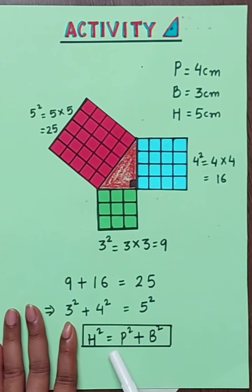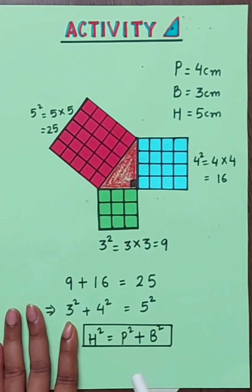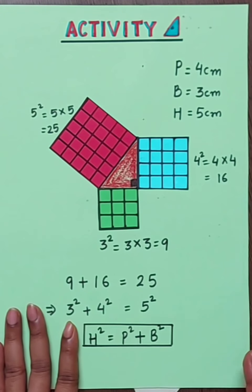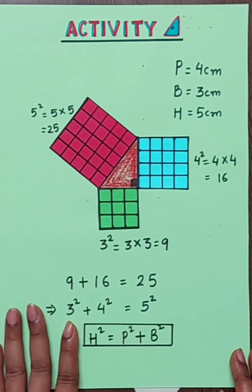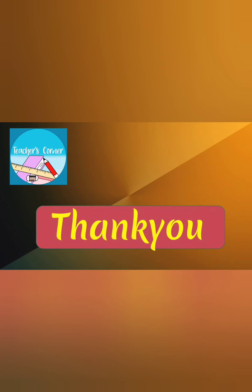This means the square of the hypotenuse is equal to the sum of the squares of the two perpendicular sides. We can write our observation as H squared equals P squared plus B squared — the square of hypotenuse equals the sum of square of perpendicular and base. This is how we have verified the Pythagoras property by doing this activity. I hope this video will be helpful for you to understand the concept of Pythagoras property. Thank you for watching and keep learning.